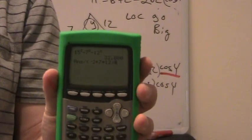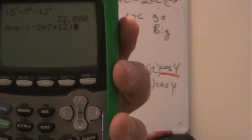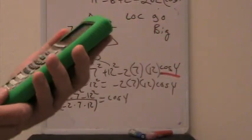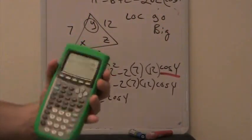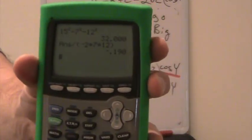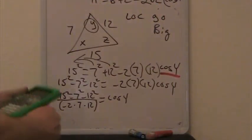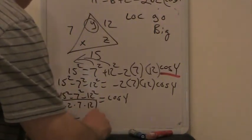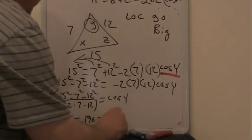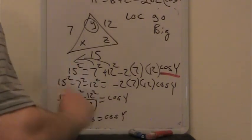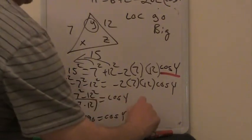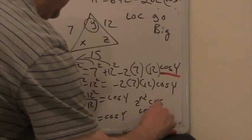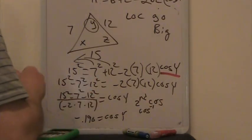And let's see if my camera person can zoom in a little bit maybe. Then when I hit enter, I get -0.19. So -0.19 is what the cosine of y is equal to. So to get y then, I have to take the inverse cosine of that. So I have to take the second cosine, or the inverse cosine, or the cosine⁻¹ key of that number, -0.19.